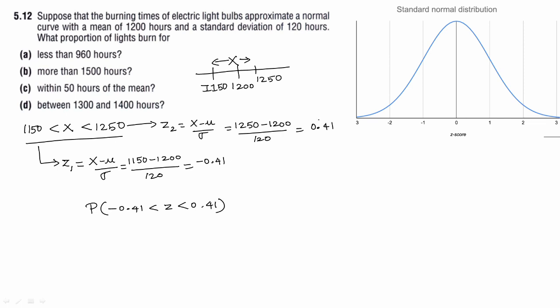We have 0.41 and negative 0.41. Because of symmetry in the normal distribution, we can use 2 times P of z equal to 0.41. Looking up 0.41 in the table gives 0.1591. So the answer is 2 times 0.1591, which equals 0.3182.